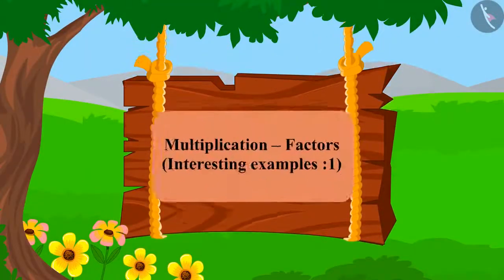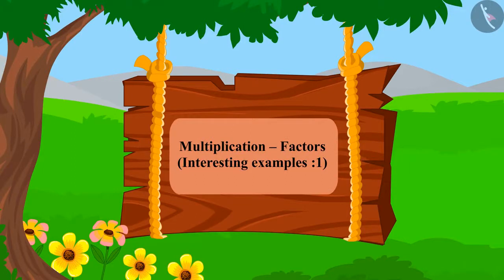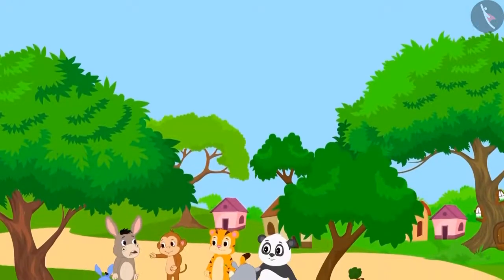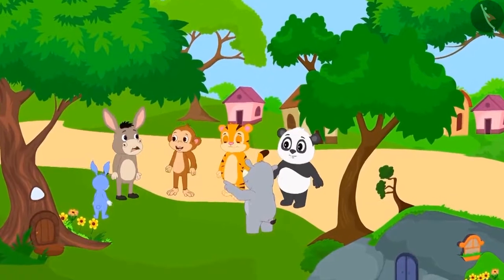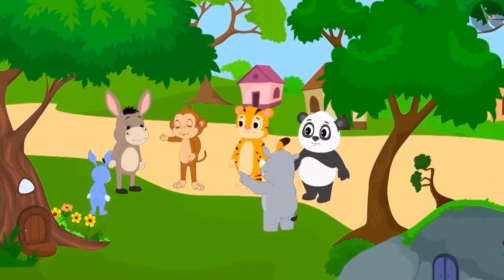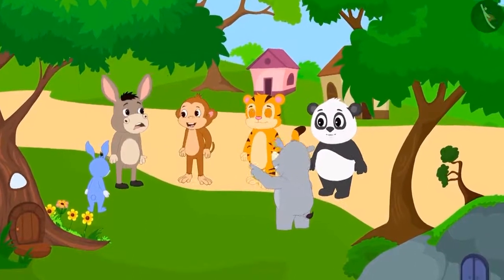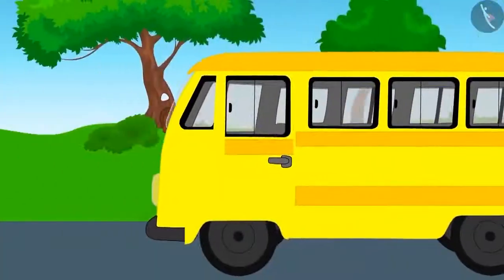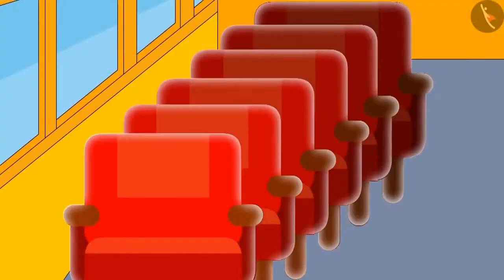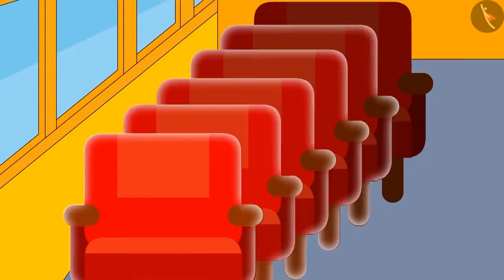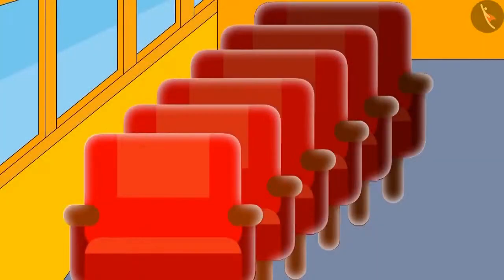Children, today we will learn more about factors of multiplication. People from Champapur are making plans to go on a picnic. They have to arrange for some buses for the picnic. The seating should be such that the number of people sitting in every row is equal. The first bus operator sent a bus in which only one person can sit in a row and there are six such rows. Can people sit in a bus like this? To find the answer to this question, we will need to find the factors of six.